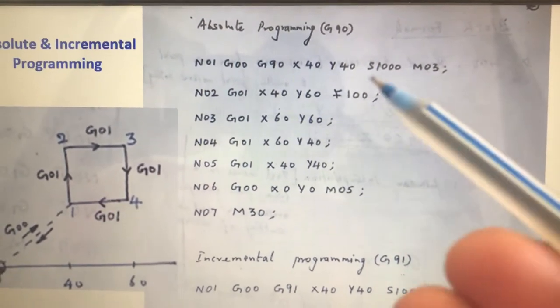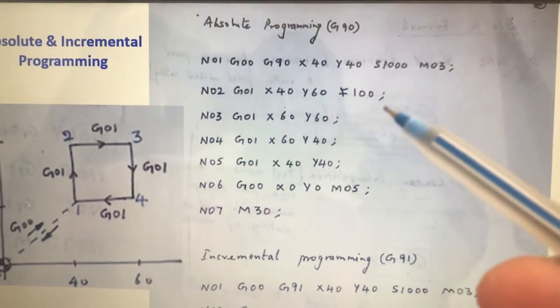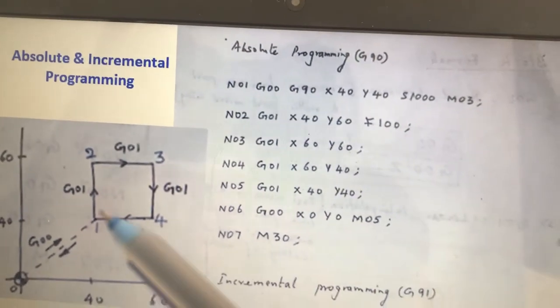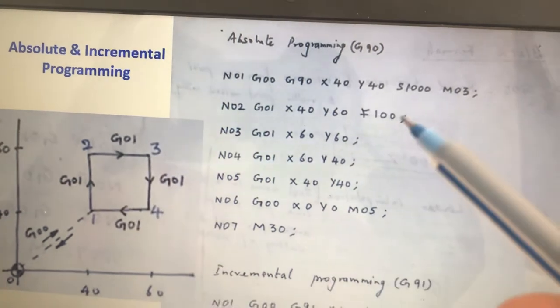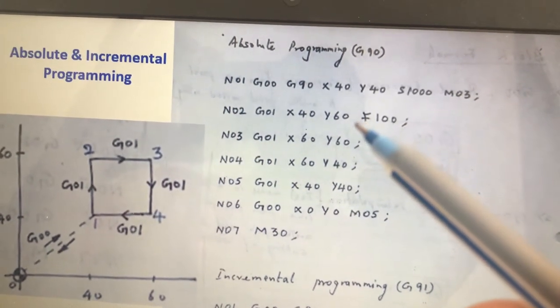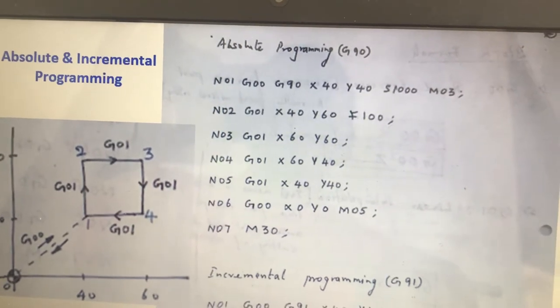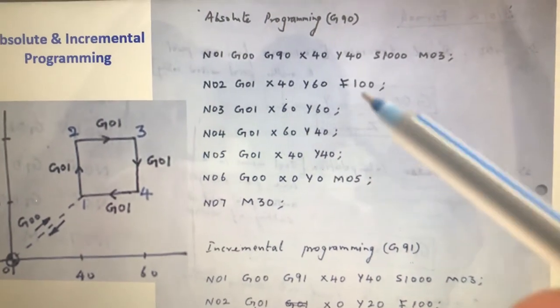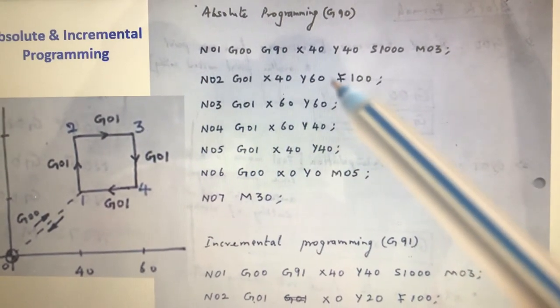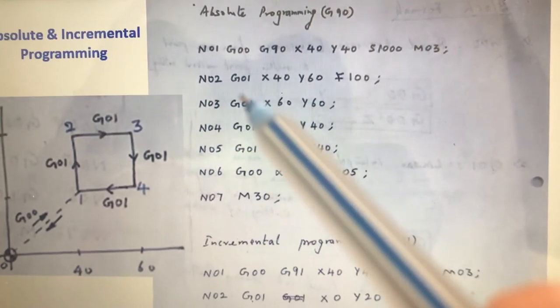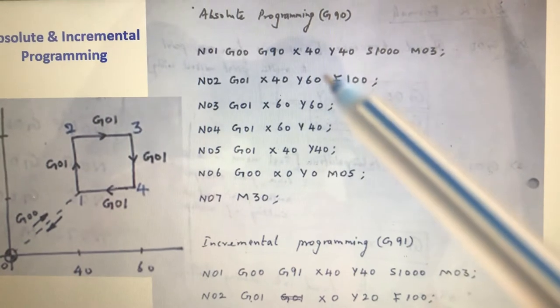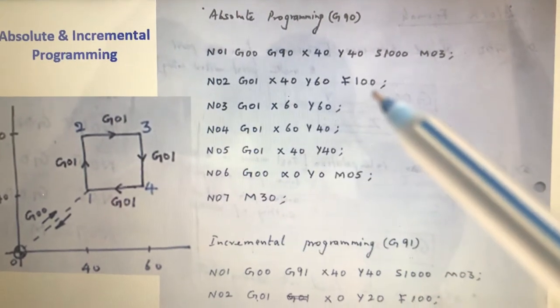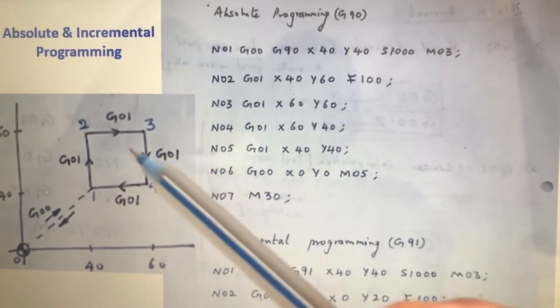There should be a value for feed. Some feed has to be given here, F. And also we have to add one point called as Z value. It is cutting stroke. So it should be Z minus one or minus two. This represents the depth of cut, one mm depth or two mm depth. I have missed to write here. So G01, X40, Y60, Z minus two and then F100 for cutting stroke from point number one to point number two.